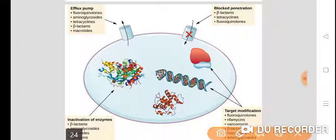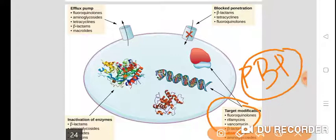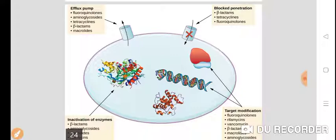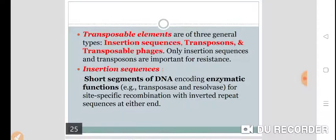Then there is target modification. For example, fluoroquinolones, beta-lactams, vancomycin, and rifamycin show this mechanism. There is a penicillin binding protein which is the target for penicillins, and there is an alteration in that particular target. These are the mechanisms by which resistance is developed.